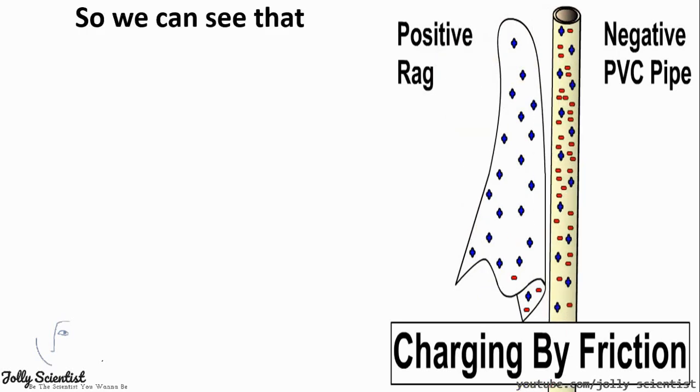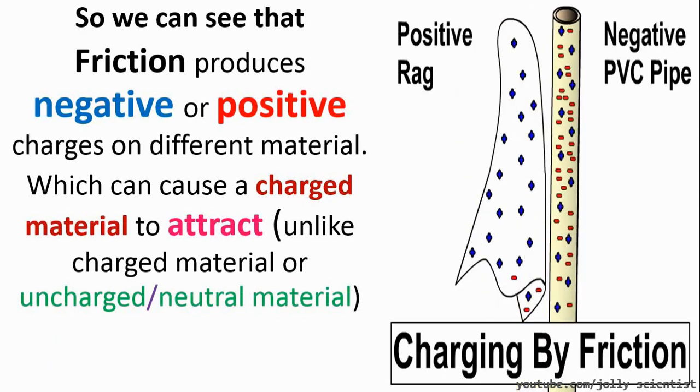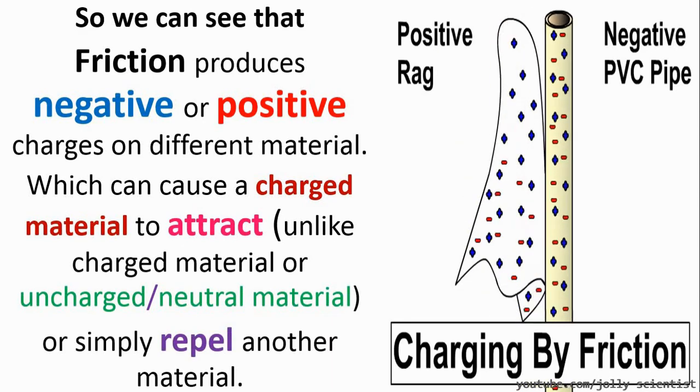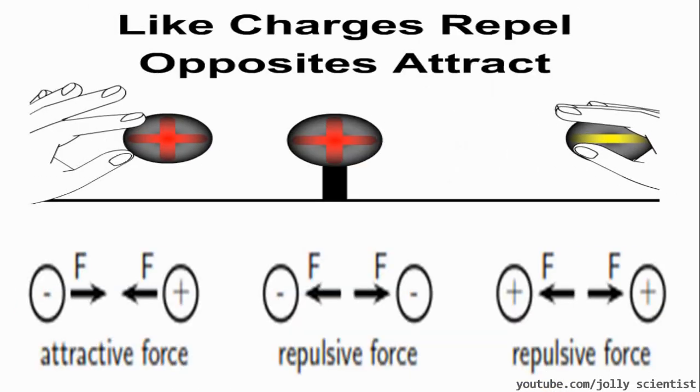So we can see that friction produces negative or positive charge on different materials, which can cause the charged material to attract or repel another material, thereby proving that like charges repel while opposite charges attract.